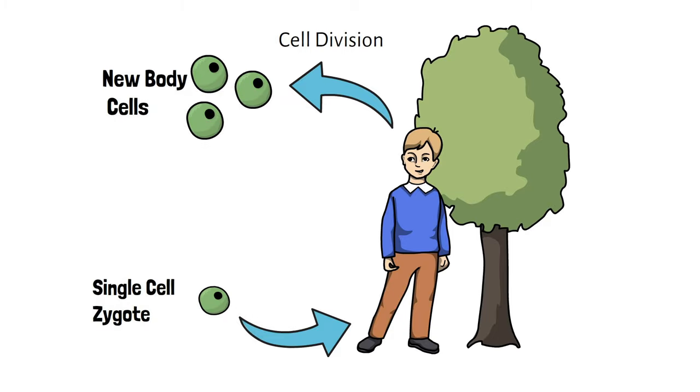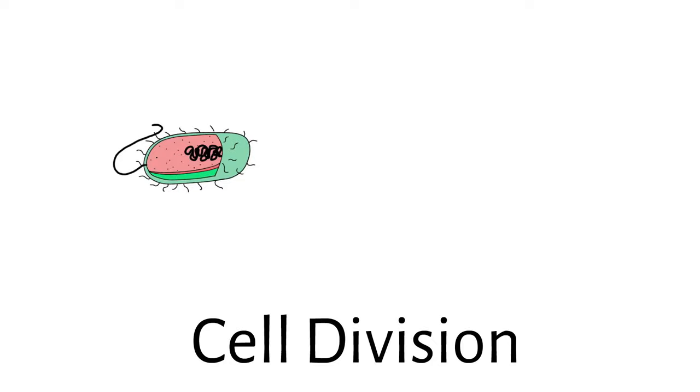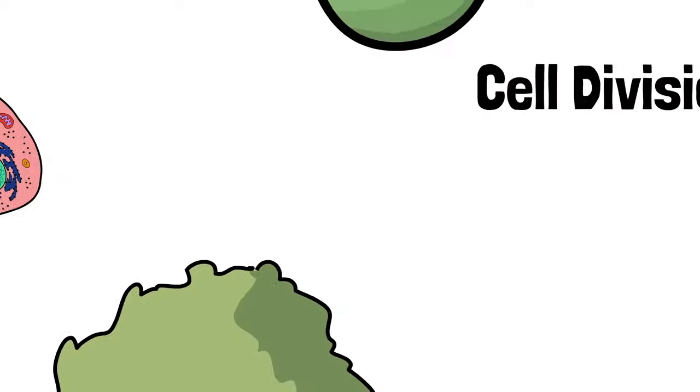Although cell division occurs in all organisms, it takes place very differently in prokaryotes and eukaryotes. We will restrict our discussion to the eukaryotic version. There are two distinct types of eukaryotic cell division.